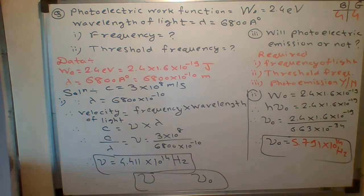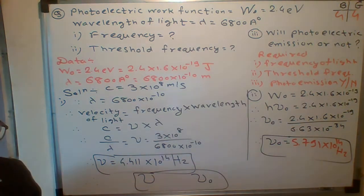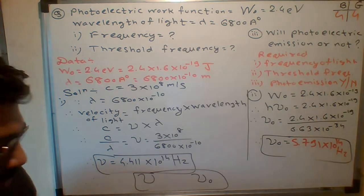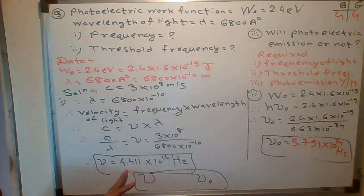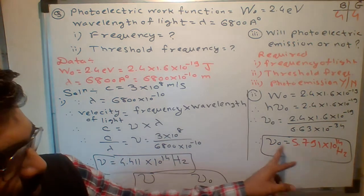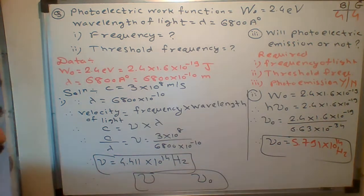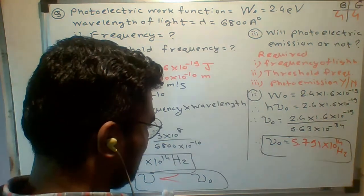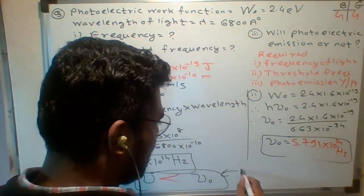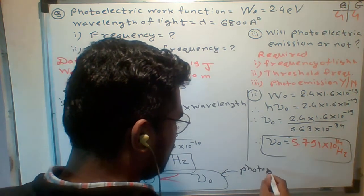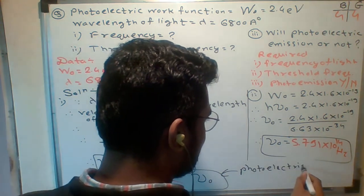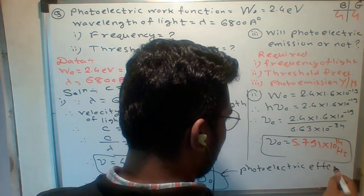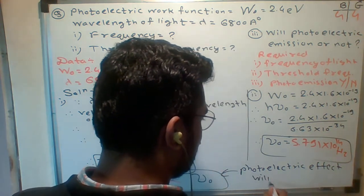Now, will photo emission occur or not? The value of ν is 4.41 into 10 to the 14, and the value of ν naught is 5.7 into 10 to the 14. Since ν is less than ν naught, the photoelectric effect will not occur.